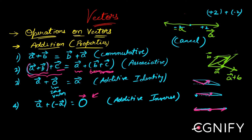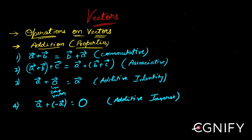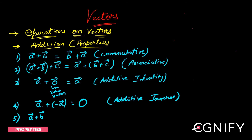Now coming to the next property, which is slightly more involved. I'll state it now, and after the formula for resultant of two vectors, you should understand it better. This property says: if I have two vectors a-bar and b-bar and add them vectorially, the magnitude of their sum will always be less than or equal to the sum of their individual magnitudes. This is also called the triangular law or triangular inequality in complex numbers.